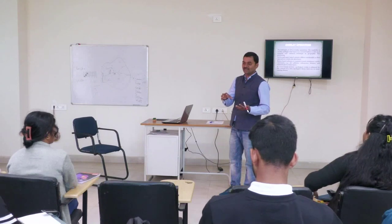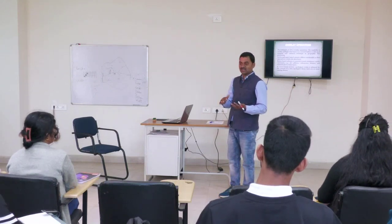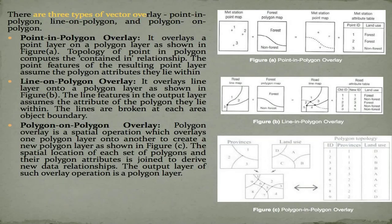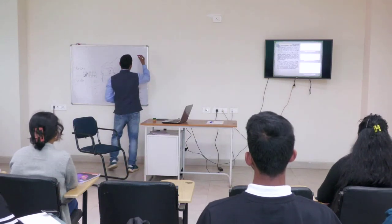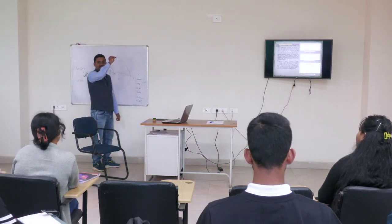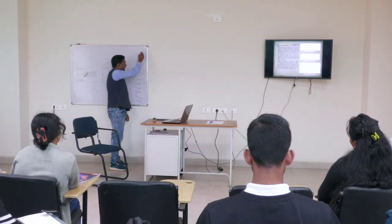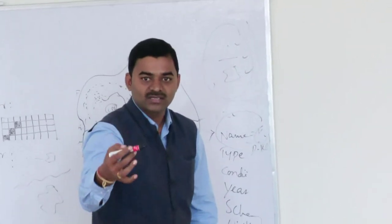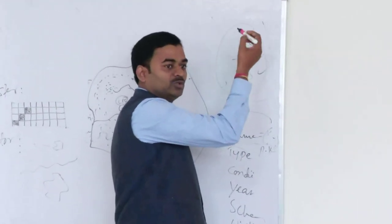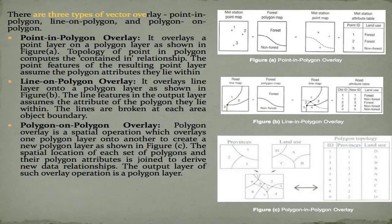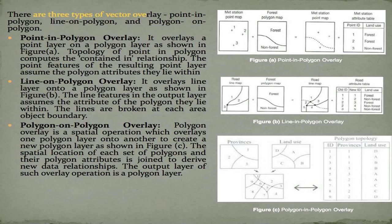Temporal data overlay can be done in three types: point on point, point on line, point on polygon, line on polygon, and polygon on polygon. But not polygon on point. Remember, when you go for overlay, the hierarchy is always point, line, polygon. You can overlay a higher-order entity on a lower one — point on polygon, polygon on polygon — but not polygon on point or line.